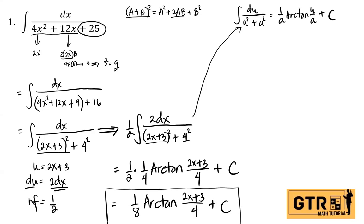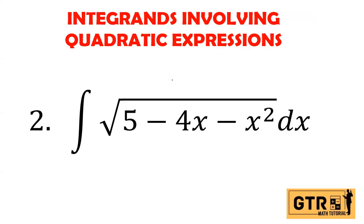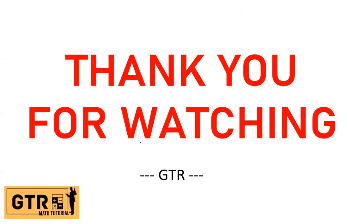If the integral contains a quadratic expression, it will lead to an inverse trigonometric function or trigonometric substitution — using the three formulas for inverse trig functions or trig substitution. Try number 2: the integral of the square root of 5 minus 4x minus x² dx. The solution will be in my next video. Thank you for watching — comment questions on my YouTube channel, FB group, or message me on Messenger at RJ Enseñado. Bye-bye and God bless.